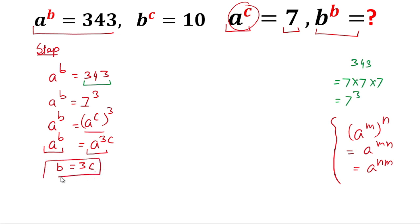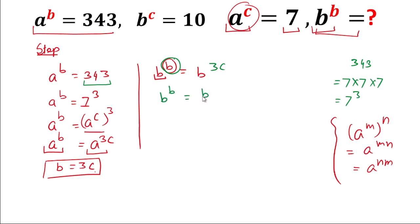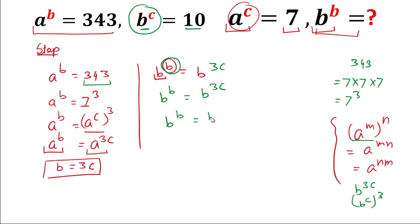Now we need to find b^b. We write b^b and substitute b = 3c, giving b^b = b^(3c). We can rewrite this using the power rule as (b^c)³. We have b^c = 10, so b^b = 10³ = 1000. Therefore, the value of b^b is 1000.